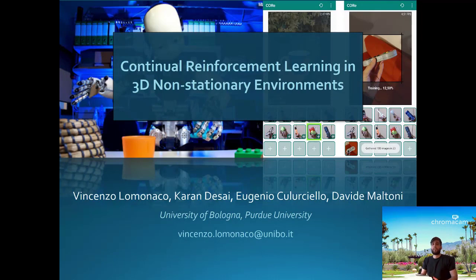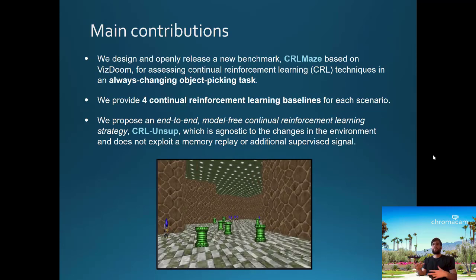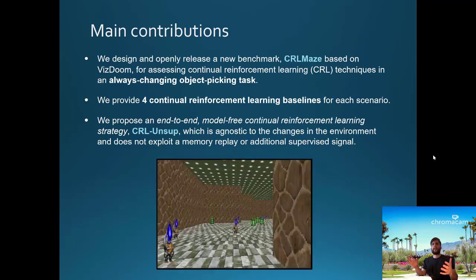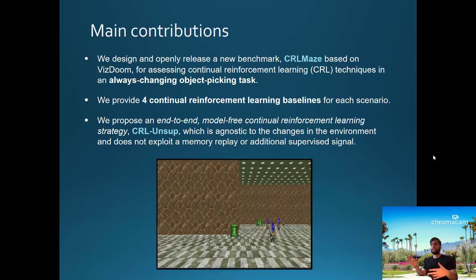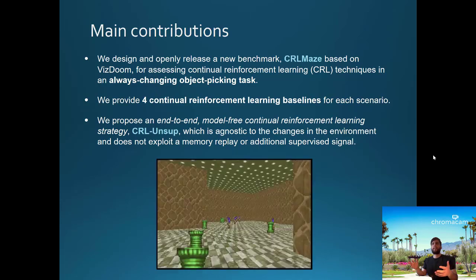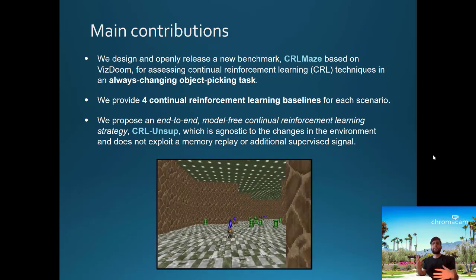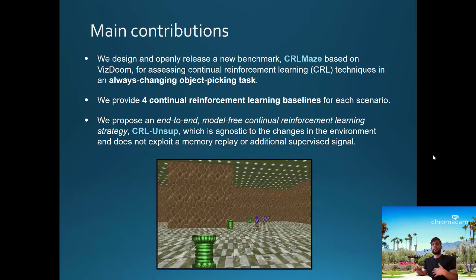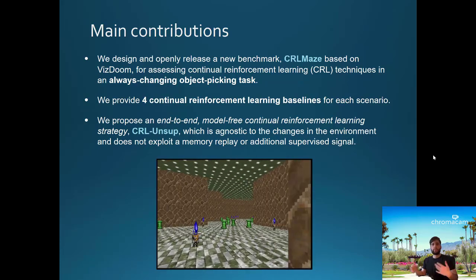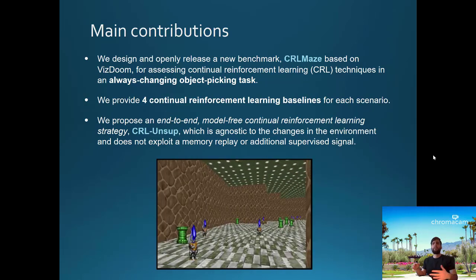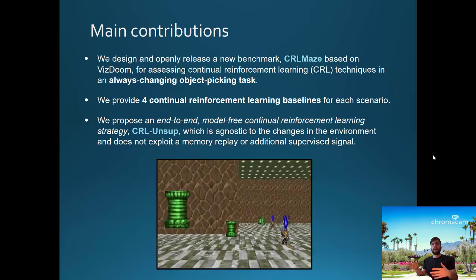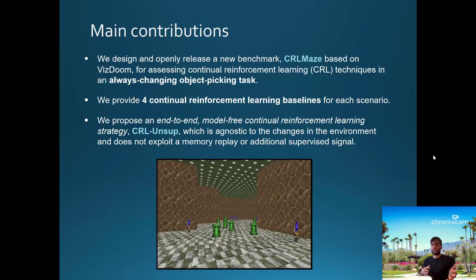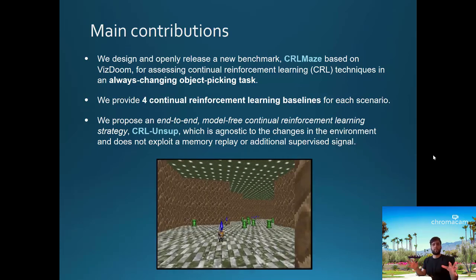Hi everyone, my name is Vincenzo Lamonaco, and in this short video I'm going to tease your interest in our latest work, Continual Reinforcement Learning in 3D Non-Stationary Environments. We designed and openly released a new benchmark, CRLNAIDs, based on ViZDoom, for assessing continual reinforcement learning strategies in an always-changing object-picking task, as shown at the bottom of the slide. We provided four different continual reinforcement learning baselines for each of the scenarios proposed, where different things are changed in the environment. We also proposed an end-to-end model-free continual reinforcement learning strategy, CRL, which is agnostic to changes in the environment and does not exploit a memory replay buffer or any additional supervised signal.